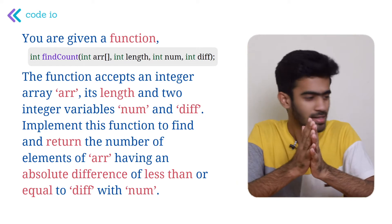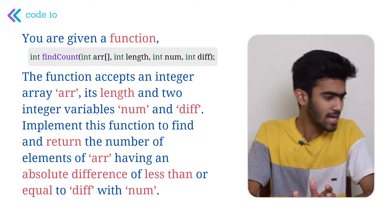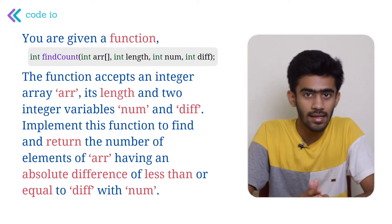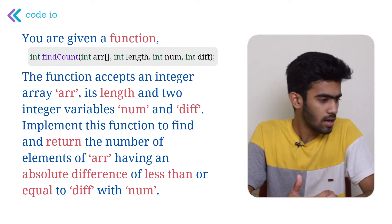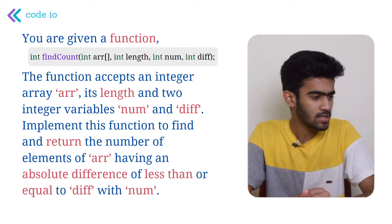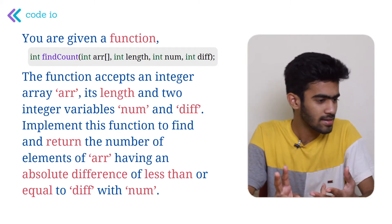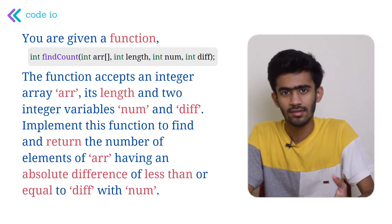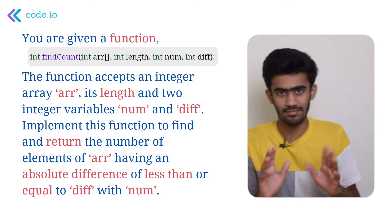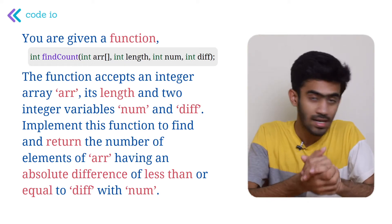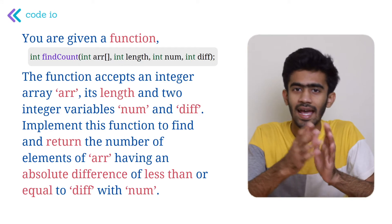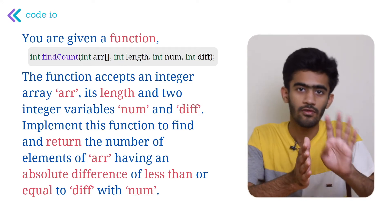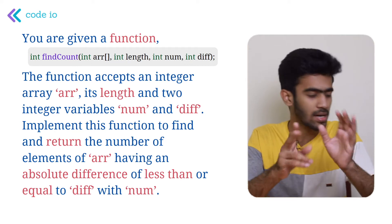So let us start with the problem. You are given a function and the name of the function is findCountOf. It returns an integer and takes four arguments: the array, the length, the num, and the difference. The function accepts an integer array ARR, its length, and two integer variables num and difference.